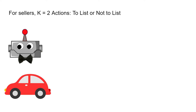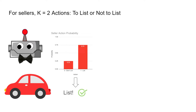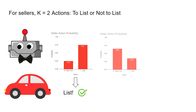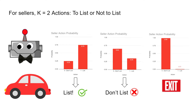For sellers, their actions are represented by a probability distribution, in which they can either favor listing — allowing the car to be sold — or not listing and abstaining from the market. If the distribution favors listing, chances are the seller is going to list the car. Conversely, if the distribution favors not listing, chances are the seller is not going to list. If the probability for not listing is vastly greater than the probability for listing, we consider this to be the seller having exited the market.